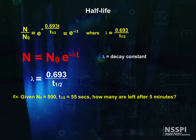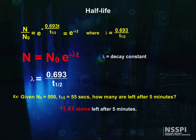Now let's work a problem. Starting with 500 atoms that have a half-life of 55 seconds, how many are left at 5 minutes? Get your pencil and paper and do it. I get 11.41 atoms, and just between you and me, I think it's kind of hard to have 0.41 atoms.